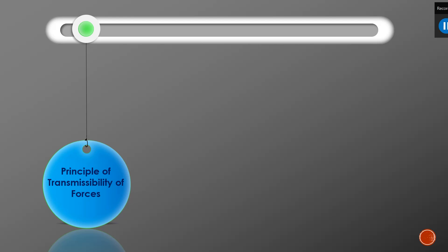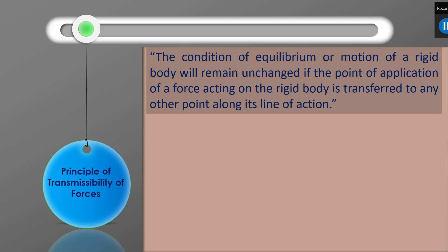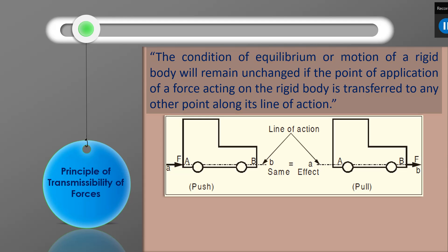Today we are going to discuss some more principles in engineering mechanics. The first one is the principle of transmissibility of forces. According to this principle, the condition of equilibrium or motion of a rigid body will remain unchanged if the point of application of a force acting on the rigid body is transferred to any other point along its line of action.